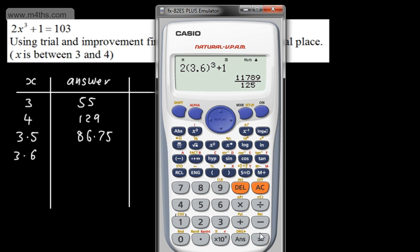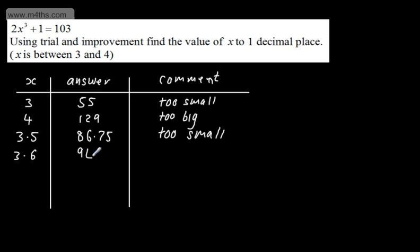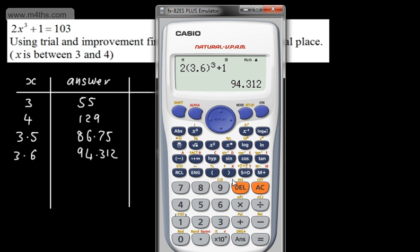So let's do 3.6 and that's going to give me now 94.312. So 94.312, this is still too small. So all I'm doing is taking values of x and increasing them. Let's now go ahead and do 3.7.